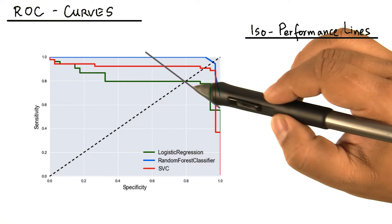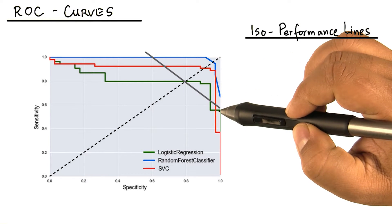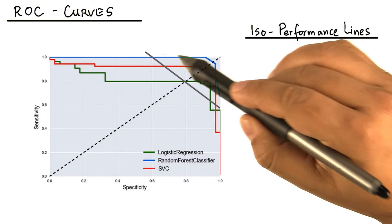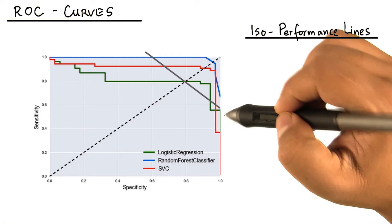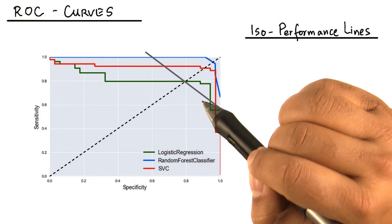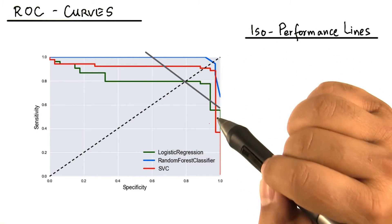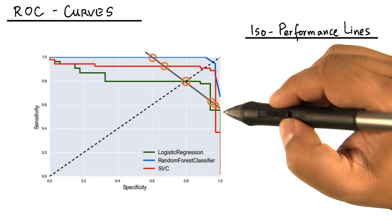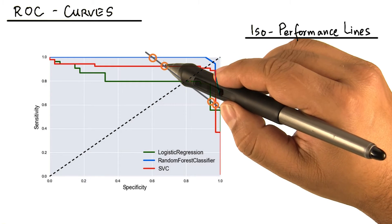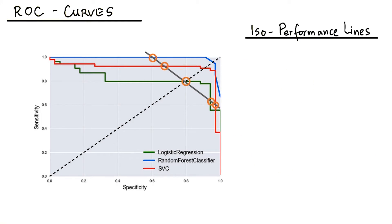If you draw a line through ROC space, then the points in the ROC curves that intersect with the straight line have the same performance. And this performance is measured by the slope of this line. The gray line that I drew intersected the ROC curves in 1, 2, 3, 4, 5 points.